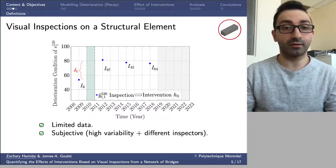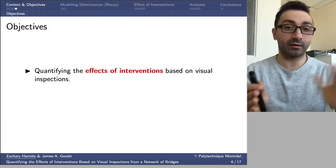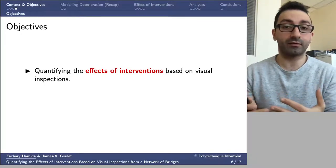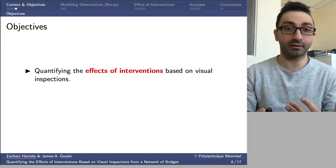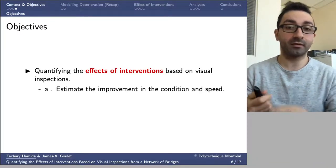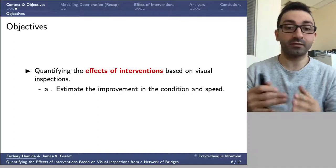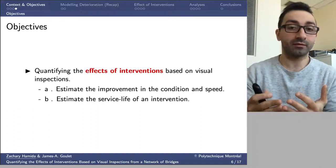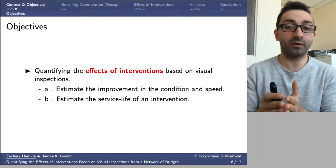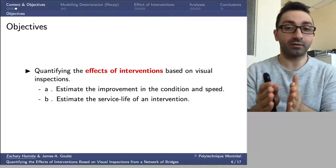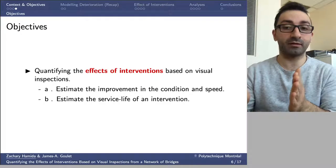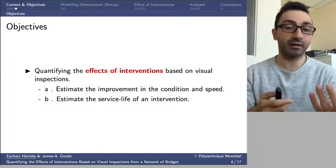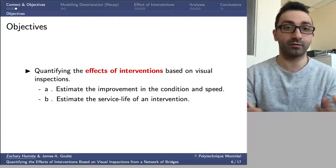Our objectives in working with this data are to quantify the effect of interventions based on visual inspection data, such that we can estimate the improvement in condition and speed following an intervention, and also estimate the service life of an intervention — how much time after applying a certain intervention until returning to the condition prior to applying it.